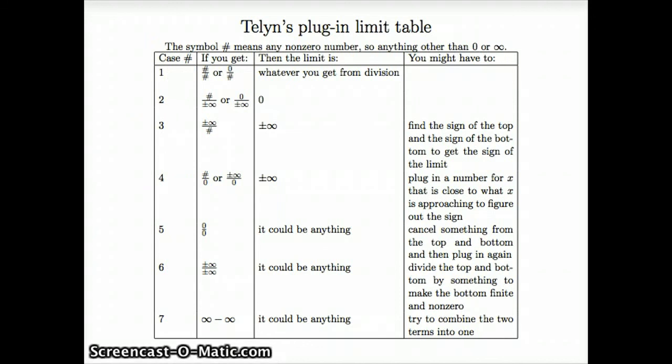So the limit as x goes to 0 of ln|x+1| over ln|x−1| is, in fact, 1. That's it for that case in the table. Now it's time to pick which video you want to see next.